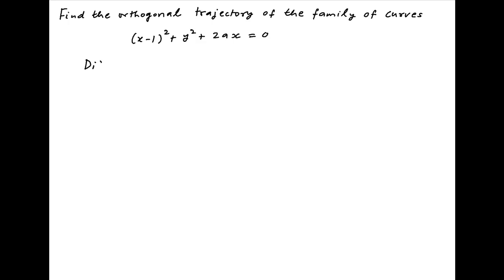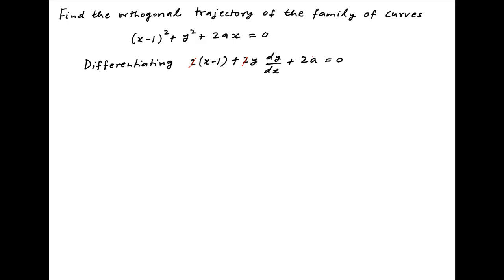Differentiating the given equation of the family of curves with respect to x, we get 2 times (x minus 1) plus 2y times dy/dx plus 2a is equal to 0. The 2 cancels, and therefore a is equal to 1 minus x minus y times dy/dx.